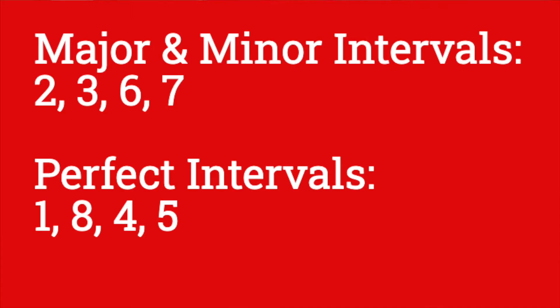This is our last video about intervals — we're going to be talking about augmented and diminished intervals. Let's first do a recap on what you've learned already: seconds, thirds, sixths, and sevenths can be either major or minor, and unisons, octaves, fourths, and fifths can be perfect. That takes care of all the numbers from one to eight.